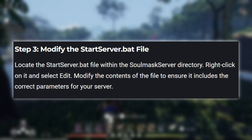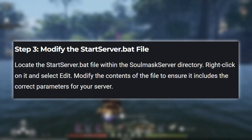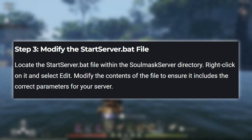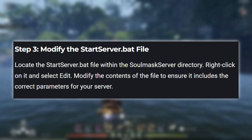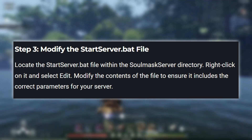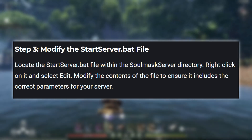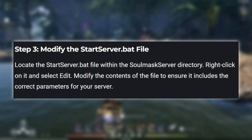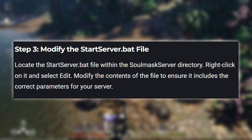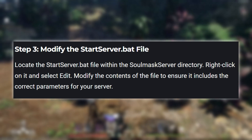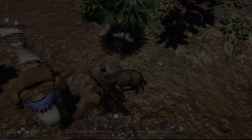Step 3: Modify the start server bot.bat file. Locate the start server bot.bat file within the SoulMask server directory. Right-click on it and select Edit. Modify the contents of the file to ensure it includes the correct parameters for your server.